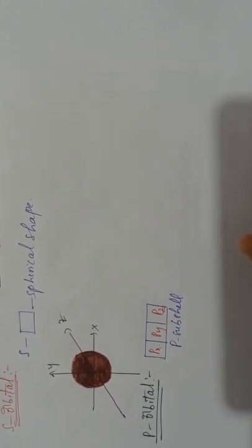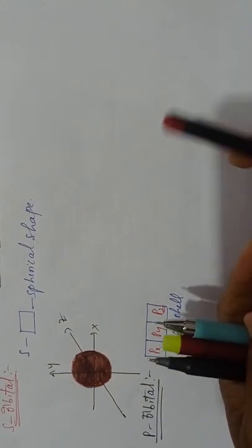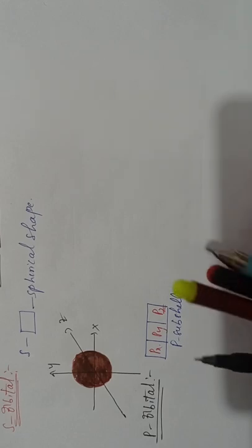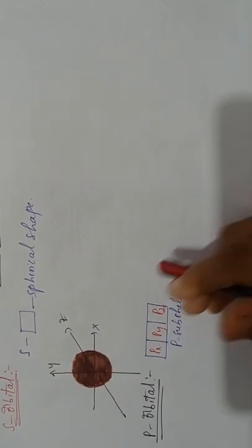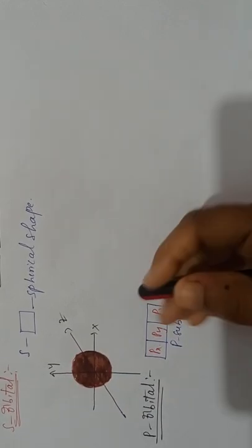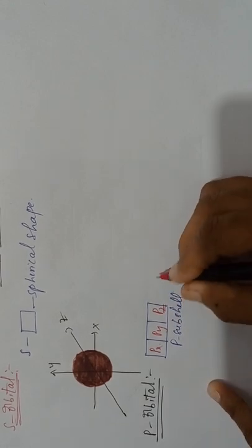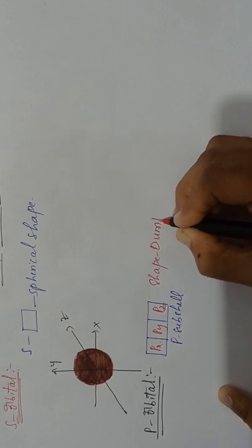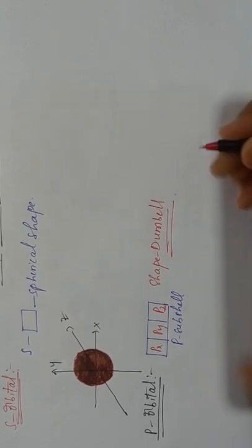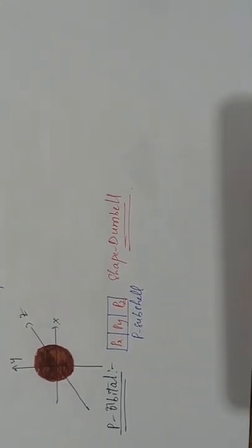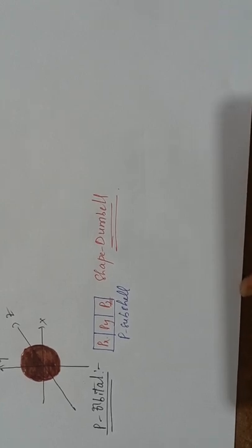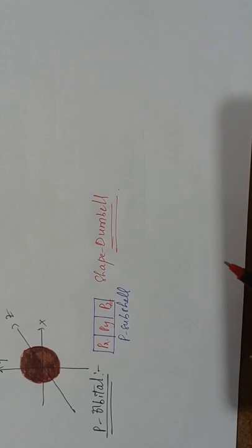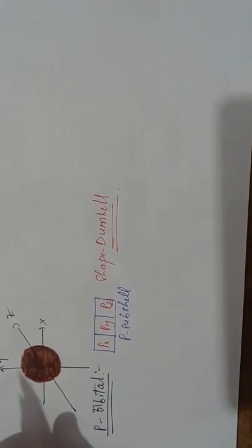Now I am going to discuss about the PX, PY, and PZ orbital structures. P orbital shape is dumbbell shape. Now I am going to discuss PX, PY, and PZ orbital shapes. Listen carefully.